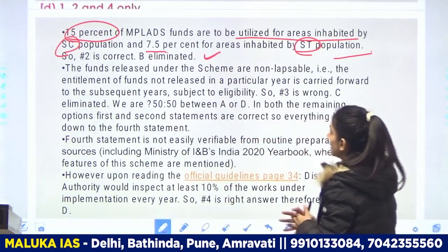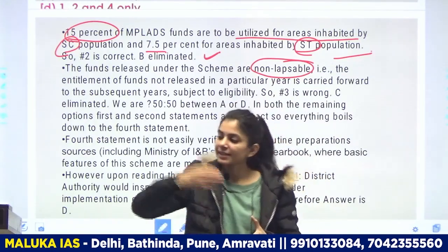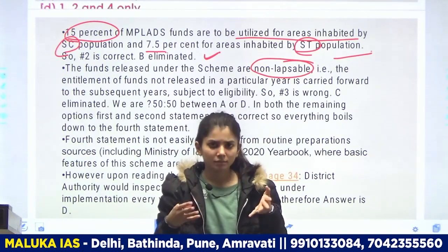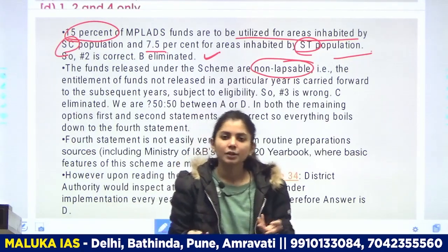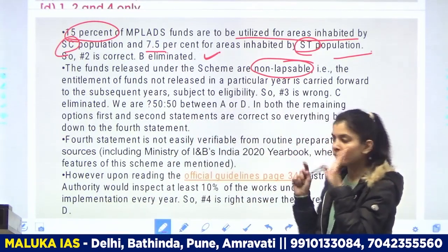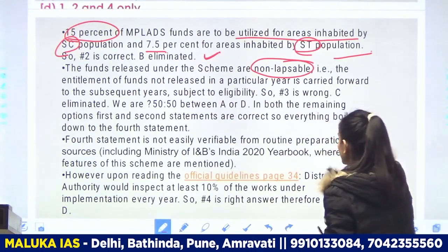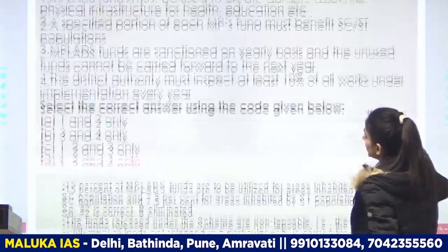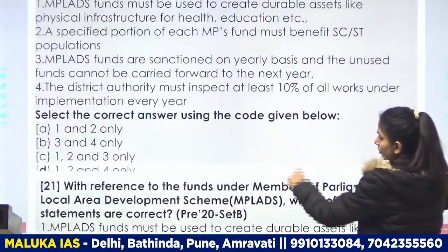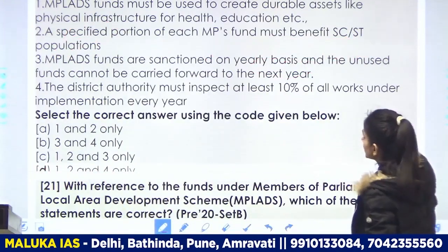Next, यह fund non-lapsable है — अगर use नहीं कर पाए तो यह next year carry forward हो जाता है। इसलिए third statement wrong है। Ministry of INB की yearbook data से, fourth statement यह है कि 10% works को district authority inspect करेगी। इसलिए हमारा answer D होता है — statements 1, 2 & 4 correct हैं, third statement wrong है।